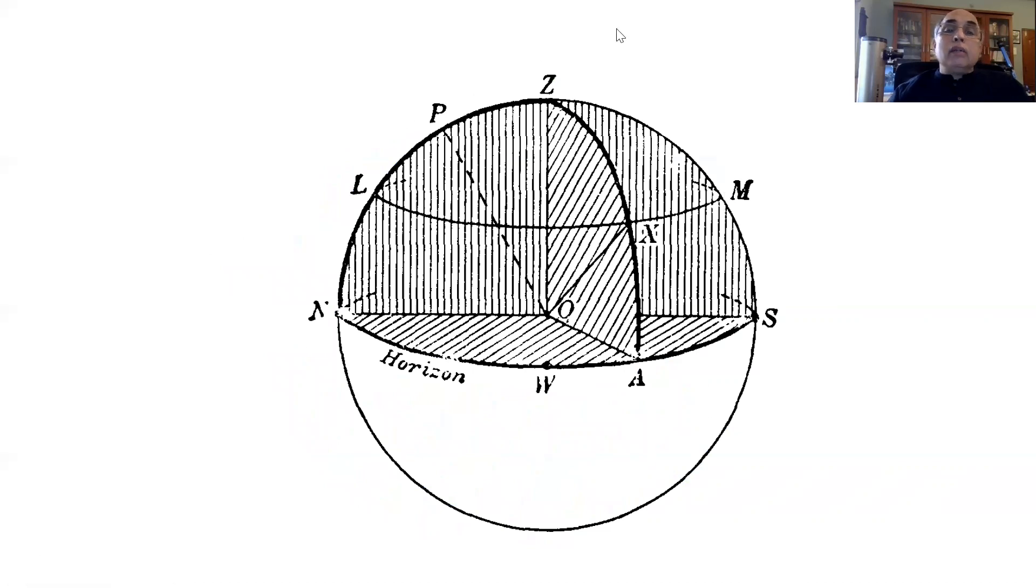The great circle which passes from zenith through the polestar all the way down is called the meridian. This is also a great circle and is of much interest to us.